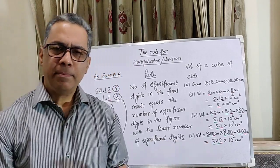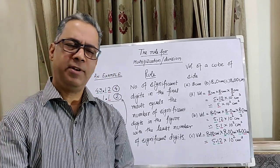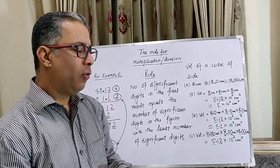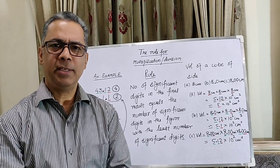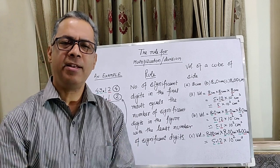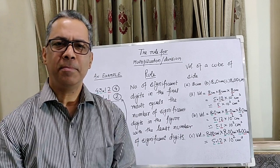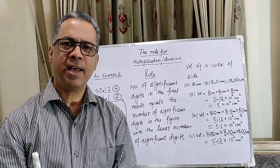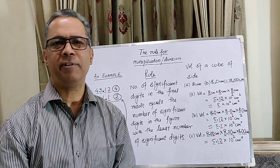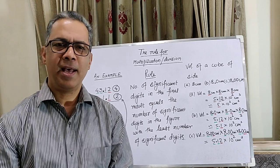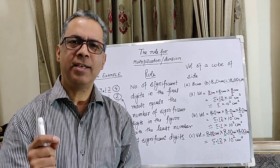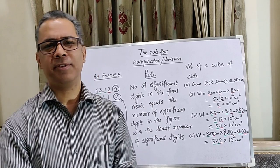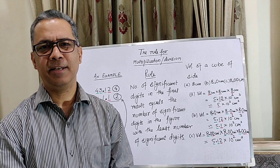And therefore, in multiplication or even division, the rule we follow is that the final answer must have as many significant digits as the input figure with the least number of significant digits.